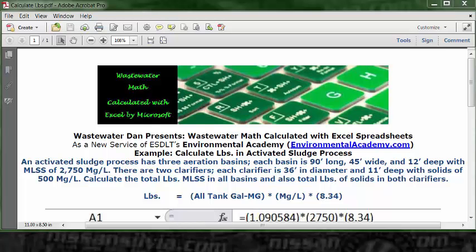Wastewater Dan presents wastewater math calculated with Excel spreadsheets as a new service of ESDLT's Environmental Academy (environmentalacademy.com). Today's example: calculate pounds in an activated sludge process. The problem reads: an activated sludge process has three aeration basins, each